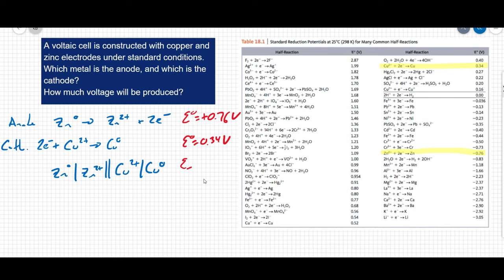So that means that E total, under standard conditions, is going to be 0.76 plus 0.34, which is going to be 1.10 volts. And I like that this is positive. It means that voltage is being given off. So that tells us that this is a spontaneous process. It's producing voltage.